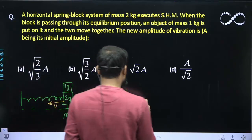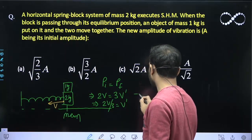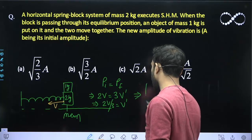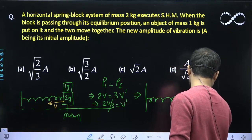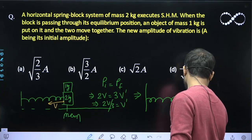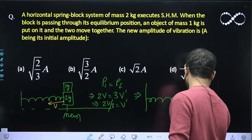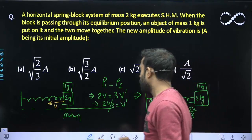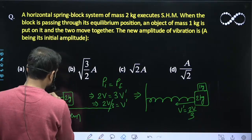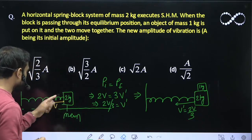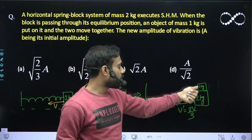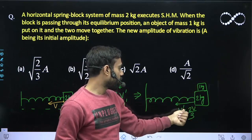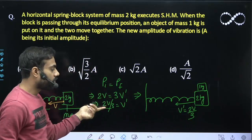After this, the new SHM will look like this. This is the block 2 kg, this is 1 kg. And now this one is moving with V dash equal to 2V upon 3. This is the initial system: 2 kg block moving with V. After putting the block 1 kg on top of 2 kg, now this is moving with 2V upon 3. Why? Due to the conservation of linear momentum.